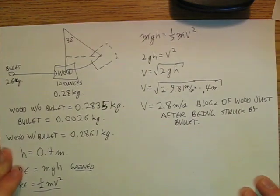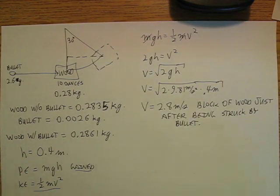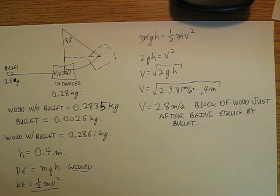So 2.8 meters per second is the speed of the block of wood just after being struck by the bullet.